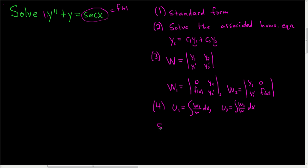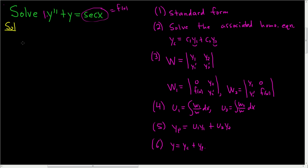Step 5 is to write down the particular solution: yp equals u1·y1 plus u2·y2. Step 6 is to write the final answer: yc plus yp. Now let's work this out carefully — it's a lot of steps, but once you do one of these on your own, you've got it. Step 1 is already done since it's in standard form.